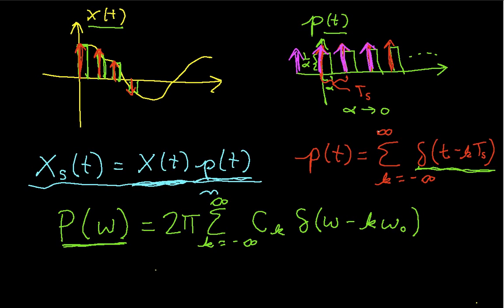Now, in our case, c sub k is 1 over t sub s, so this becomes 2 pi over t sub s, the summation k going from minus infinity to infinity of delta of omega minus k. Omega 0 in this case was 2 pi over t sub s. So, now we have the expression for p of omega.